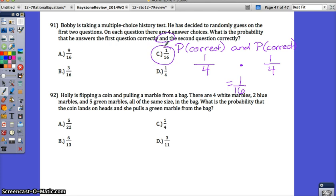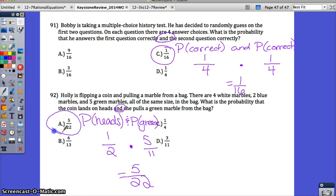Number 92 is just like 91. You want to know what's the probability of getting heads on a coin and the probability of pulling a green marble. Well, the possibilities on flipping a coin are heads or tails, so there's only two outcomes. How many of those outcomes are heads? One. The probability of getting a green marble. Well, how many marbles are there total? There's four white, two blue, and five green. Four plus two plus five gives me 11. How many are green then? How many ways can you pull a green marble out? Well, you could pull five different greens out of the bag. Remember that and with probability means to multiply, and you multiply fractions straight across, so it would be 5 over 22. Your probability for 92 is A.